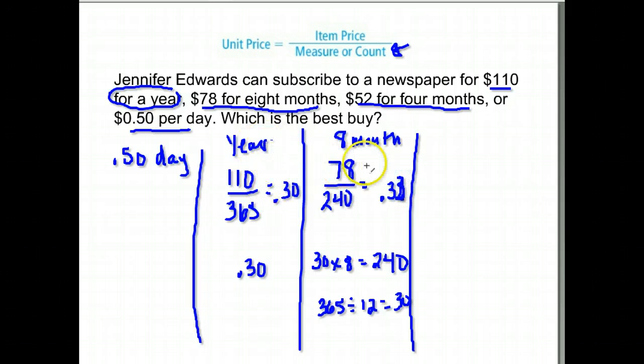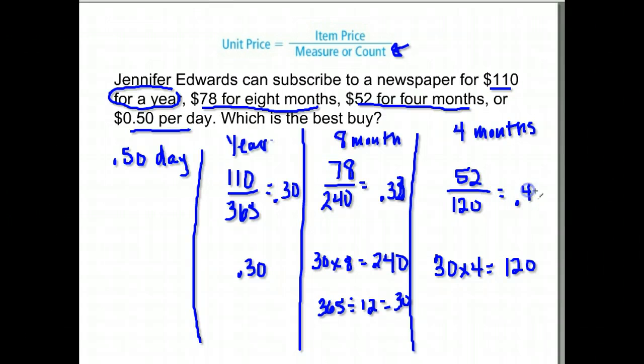Let's go to the four months. What's the unit price for four months? It's $52. We need to divide by how many days that would be. So again, we'll assume there's 30 days in a month for four months and find out how many days that is. That is 120 days. So we have $52 for 120 papers. 52 divided by 120 is 43 cents.